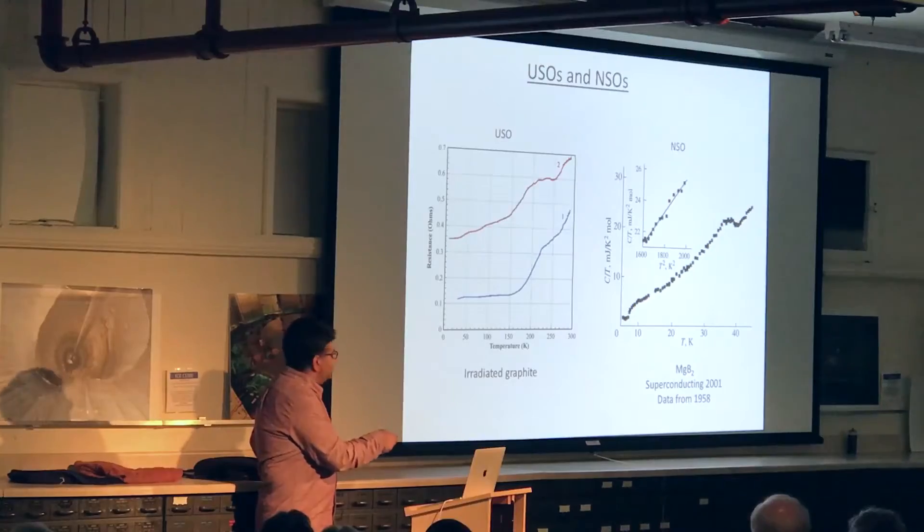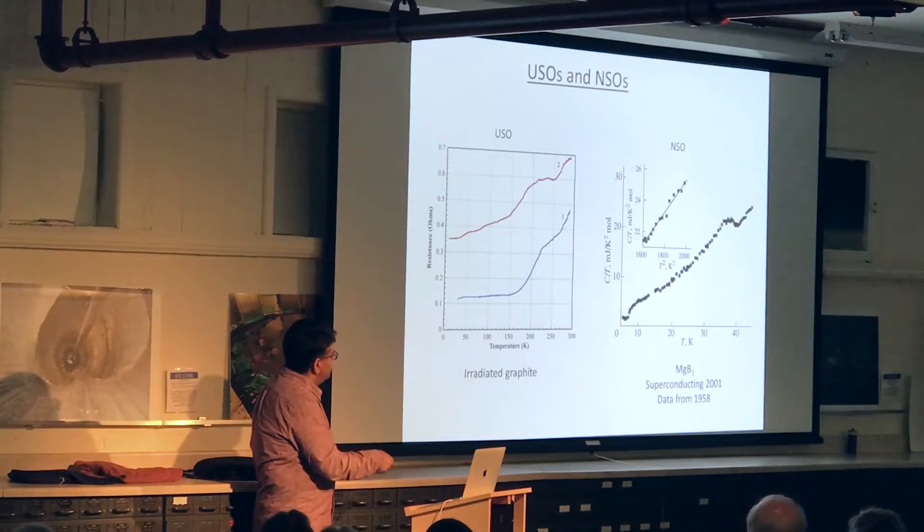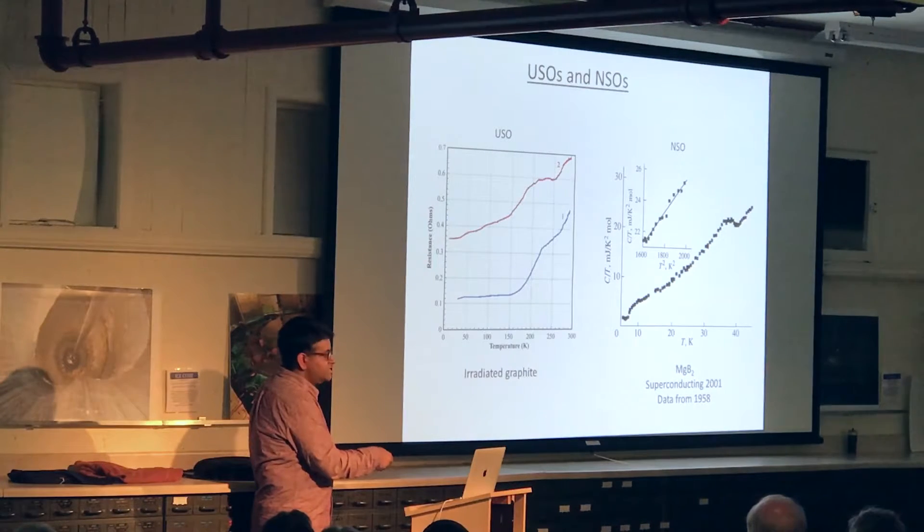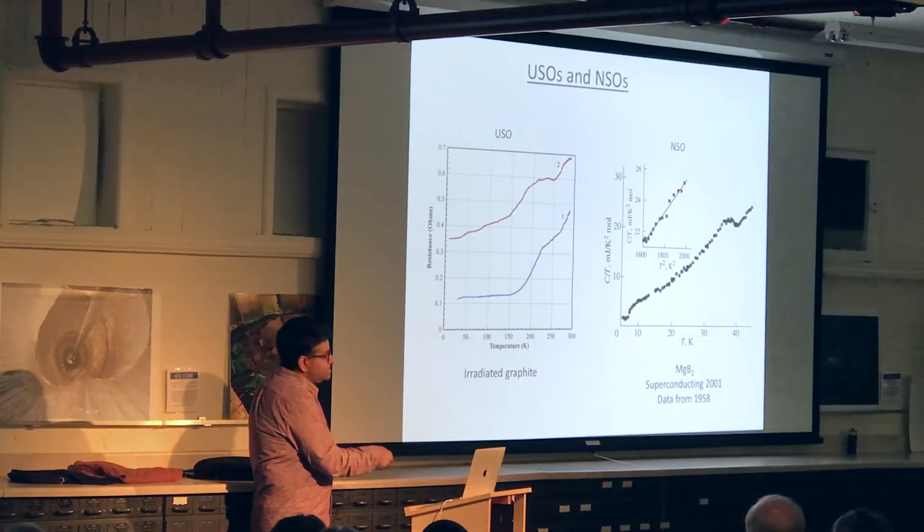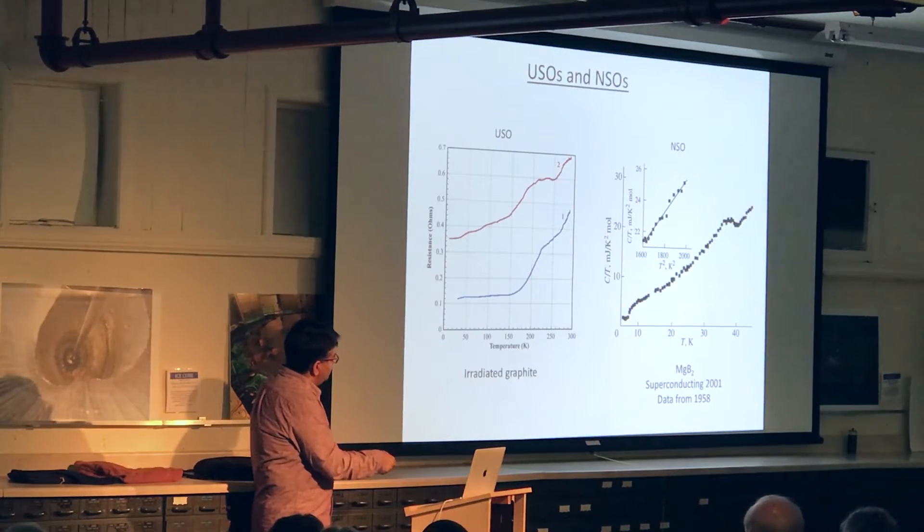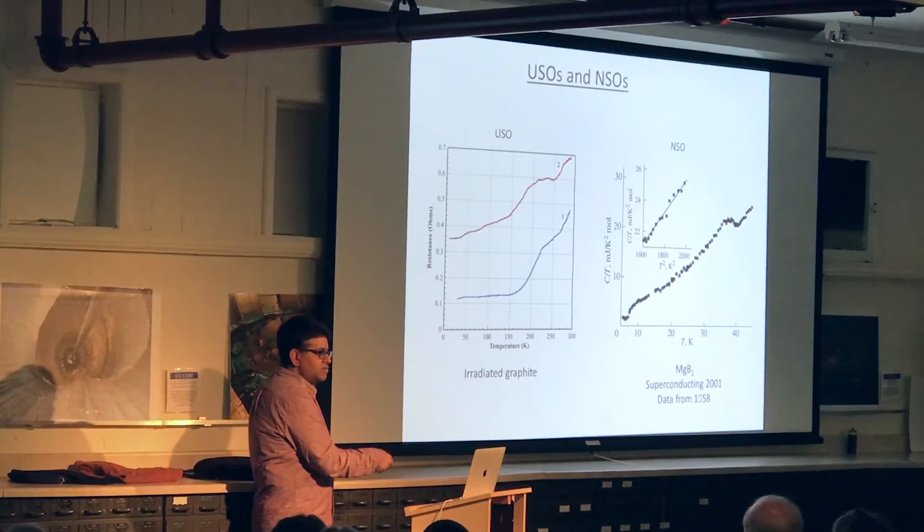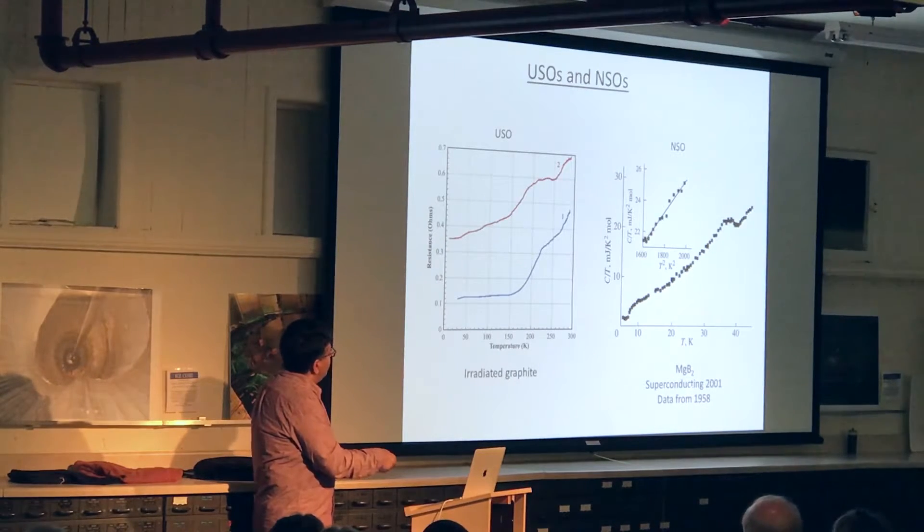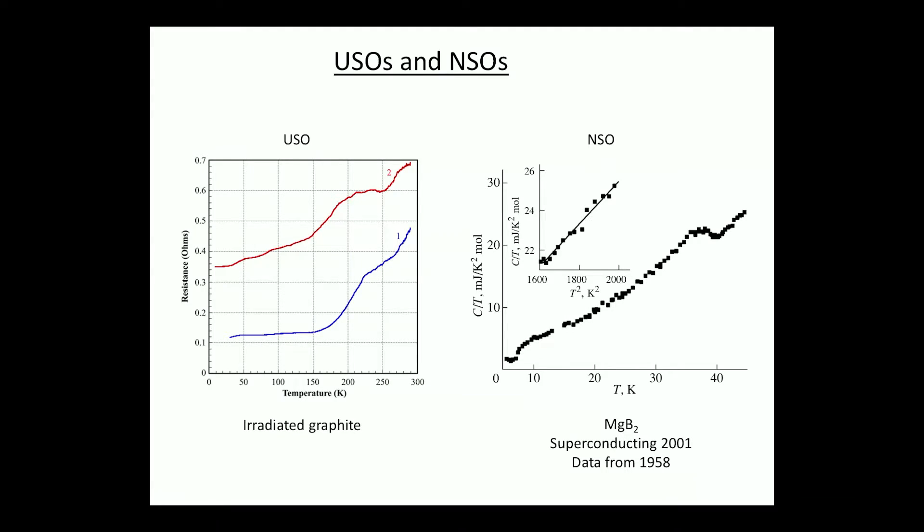The other thing also happens. So this is a very famous example. This is a compound called magnesium diboride, MgB2. So this thing was found to be a superconductor in just 2001, quite recently. And it was found that it was superconducting at a temperature of 39 Kelvin, which is extremely high for superconductors.